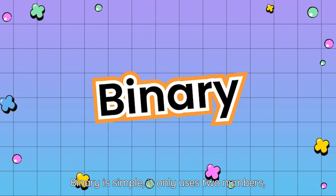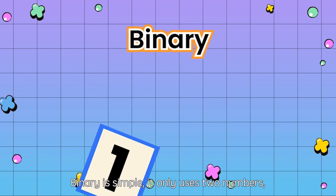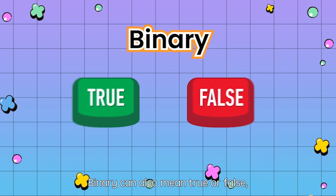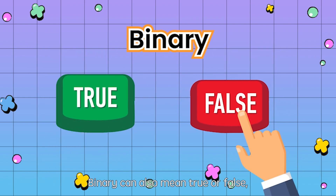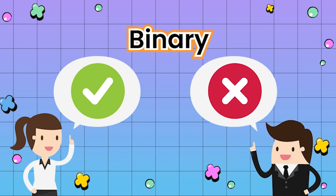Binary is simple — it only uses two numbers: one and zero. Binary can also mean true or false, or yes or no.